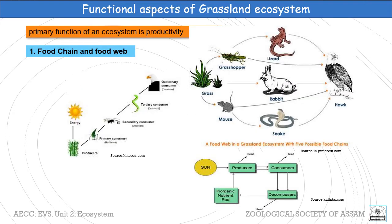Coming to the functional aspect of a grassland ecosystem, the primary function is productivity. Here in this picture we can see an example of a food chain present in such an ecosystem. Grasses are the producers, and the primary consumer is an insect feeding on them. The primary consumer serves as food for the secondary consumer, which in turn serves as food for the tertiary consumer — here shown as a snake. Finally, the tertiary consumer serves as food for the quaternary consumer, which is a hawk.